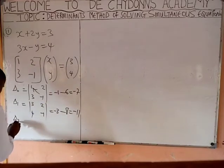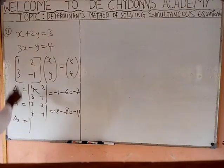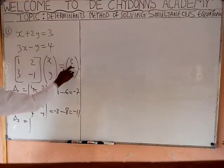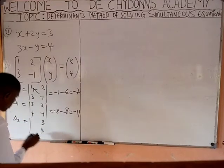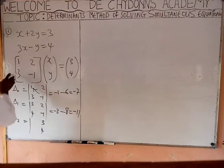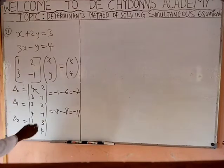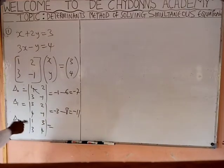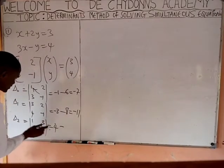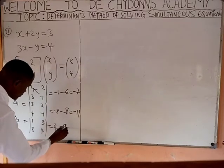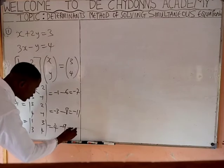Now get Delta 2. In Delta 2, you remove the second column, carry 3 and 4 and put them here. Then write the first elements: 1 and 3. We now say 1 times 4 = 4, minus 3 times 3 = 9. So 4 minus 9 gives you minus 5.